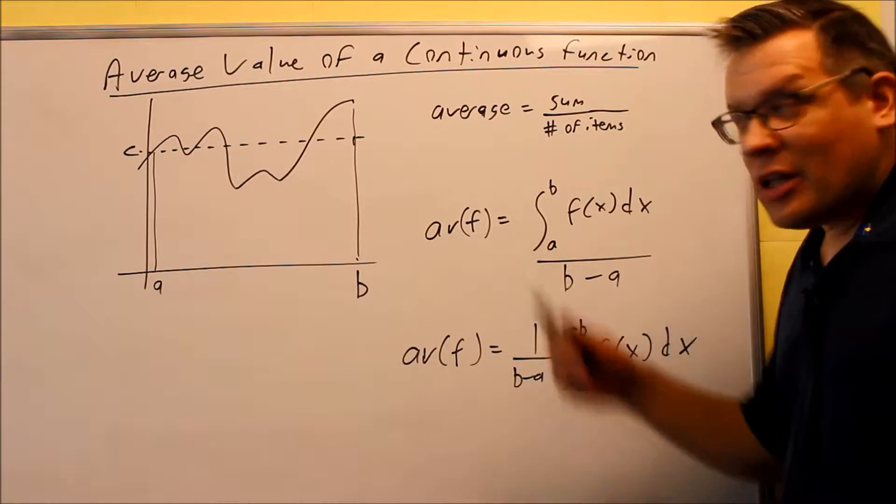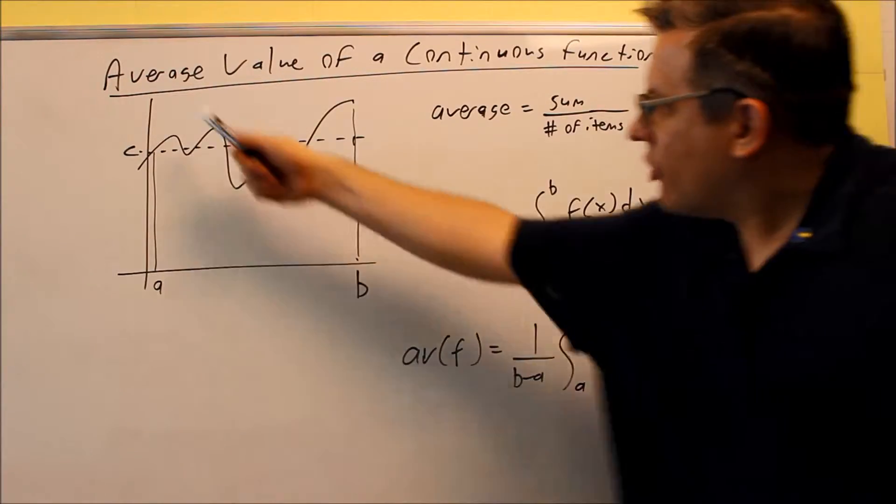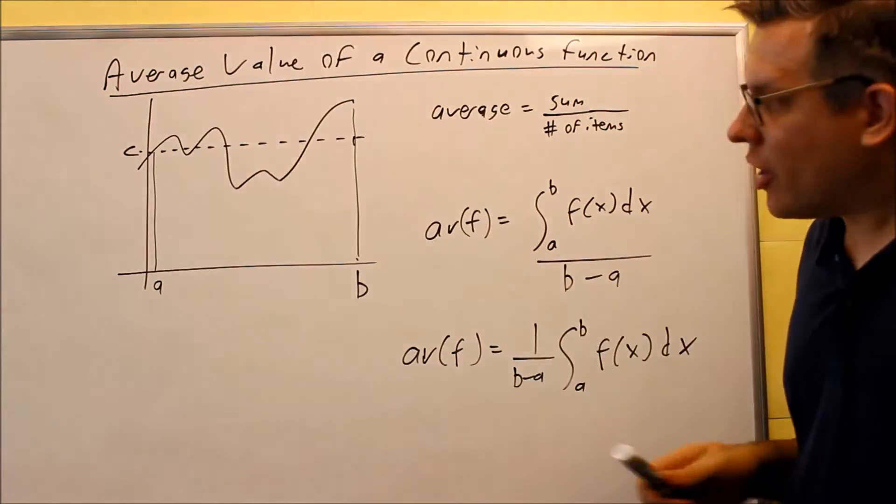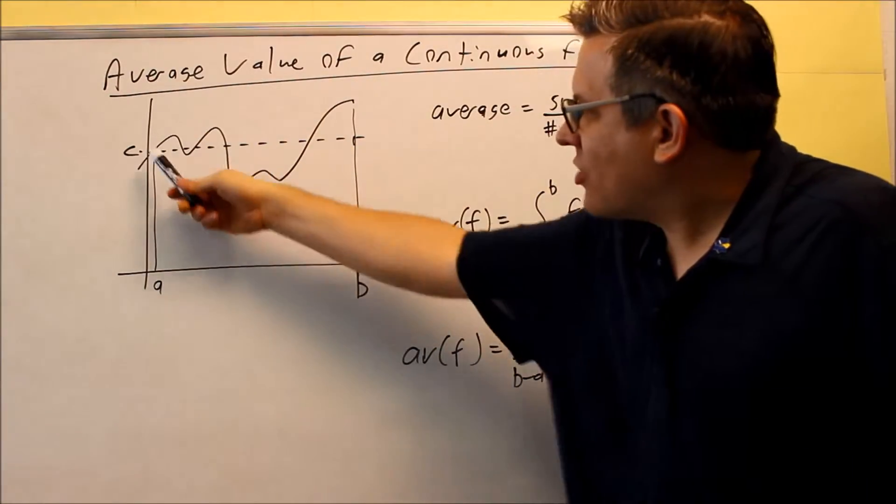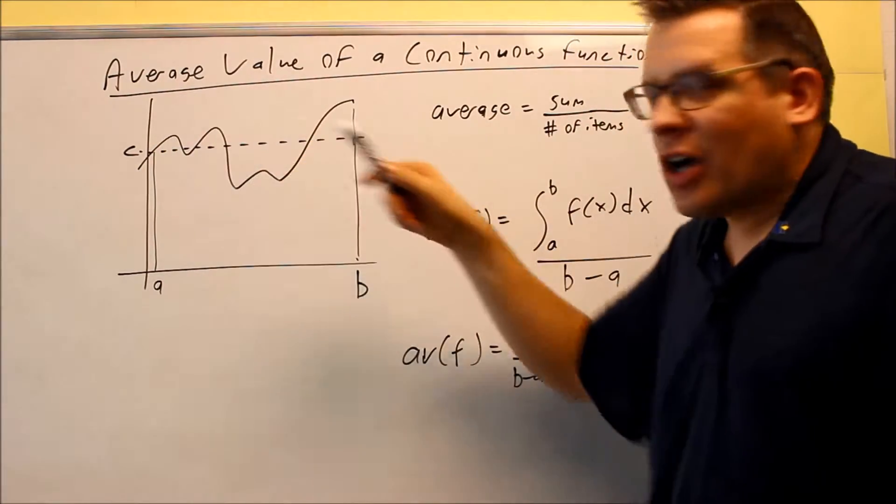The last concept in this session is the average value of a continuous function. The concept here is you've got some kind of graph that goes up and down, bounces up and down. What we're trying to find is a C value where this is going to be the average of all the different heights.